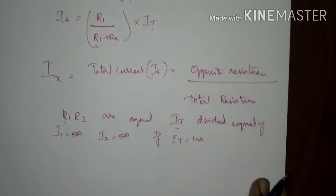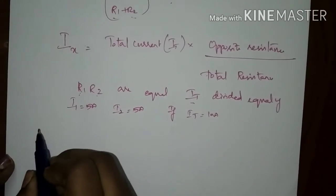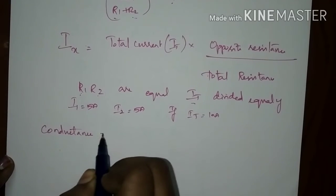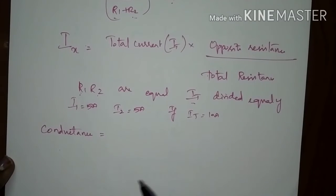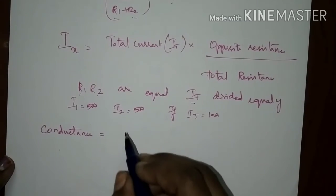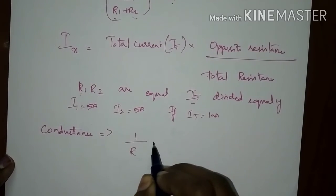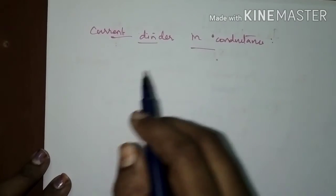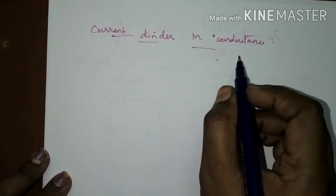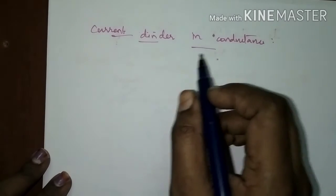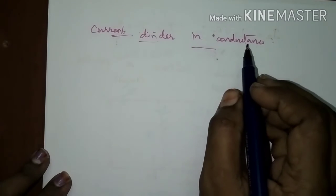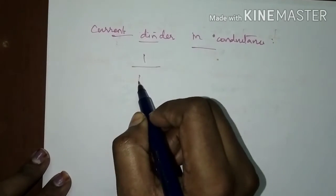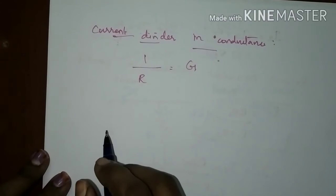The current dividing equation can also be expressed in terms of conductance. Conductance is the term opposite to resistance — resistance resists the flow of current, whereas conductance allows the flow of current. The reciprocal of resistance is conductance, and it is denoted as G.